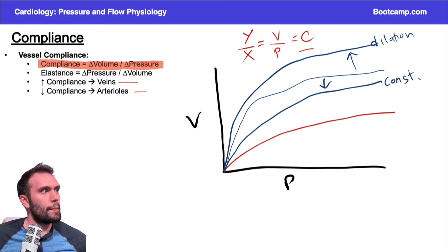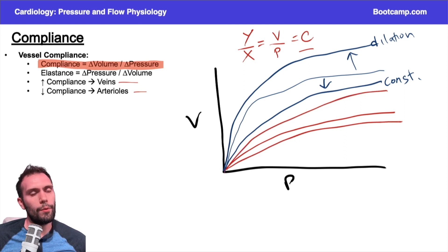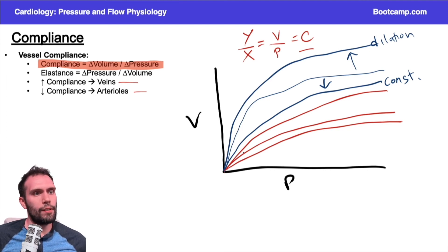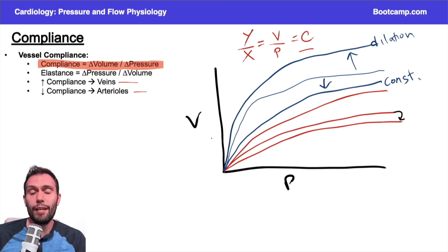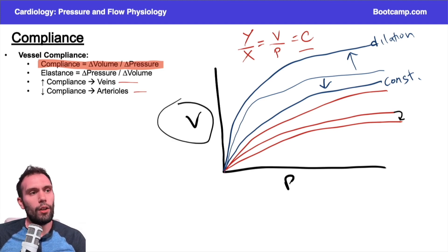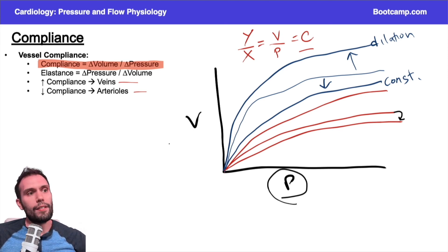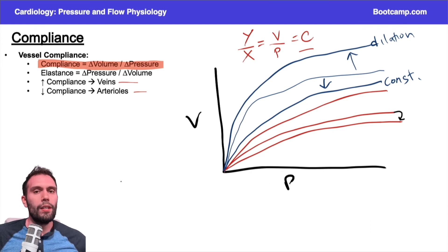For arteries it's the same thing: if I dilate my arteries the curve moves up; if I constrict, the curve moves down. What happens when we get older? As we age, we have increased stiffness in our arteries. A board question might ask which way the curve goes with aging — as we age, the curve should move down. We're going to have less change in volume for a given pressure because the arteries are more stiff. They're less able to change their volume to adapt to changes in pressure, so the pressure inside that vessel is also going to be higher. Patients will have hypertension because they're not able to accommodate their changes in pressure — they're going to have very poor compliance.